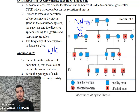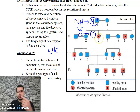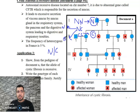NN and CC each produce one type of gamete. NC produces two types of gametes — half N and half C.